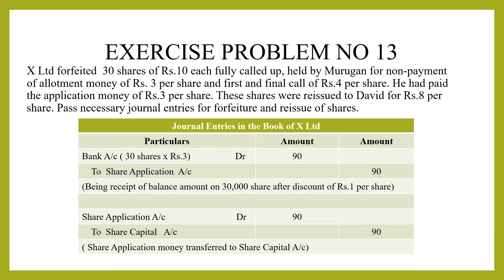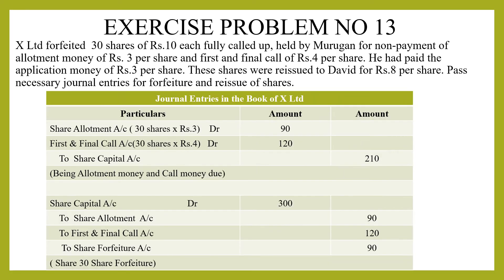For the journal entries: share application money received — bank account debit to share application account. Then share application money is transferred to share capital. For amounts still to be received — debit what is receivable. Share allotment money is ₹3 per share, first and final call money is ₹4 per share. After this transaction you will have allotment of ₹90 and call of ₹120. Allotment money and call money are due.